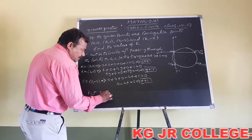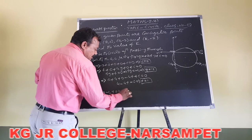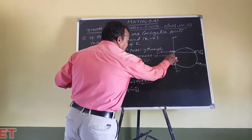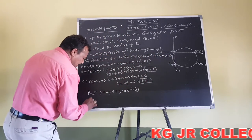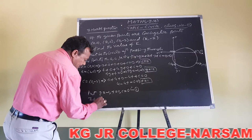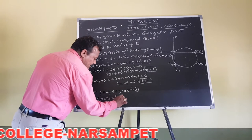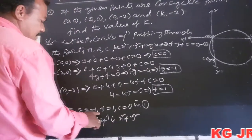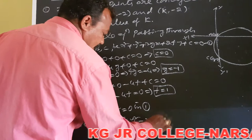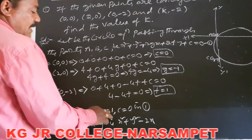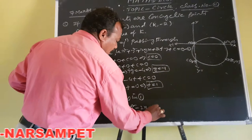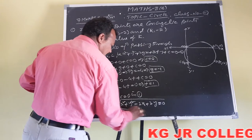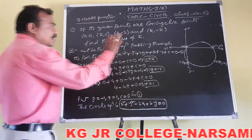Substituting g=-1, f=1, c=0 into the general circle equation, the circle equation passing through the three points is: x² + y² - 2x + 2y = 0.